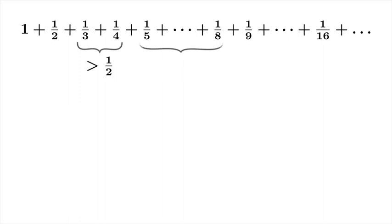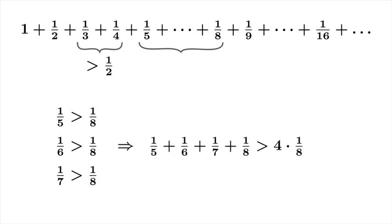Now let's look at these next four terms. We'll notice that 1/5, 1/6, and 1/7 are all bigger than 1/8. And that means when you add up these four terms, you've got to get something that's bigger than four times 1/8, which is 1/2. So these four terms add up to something greater than 1/2.